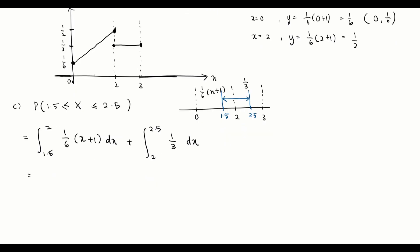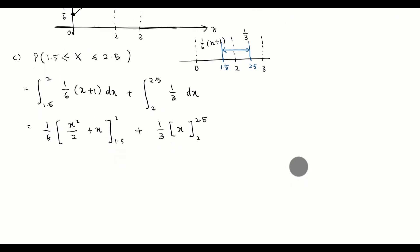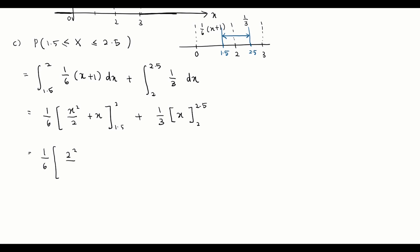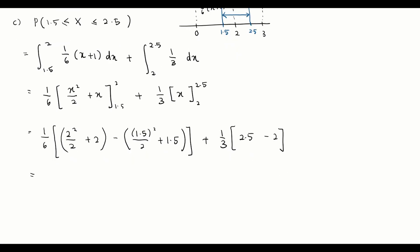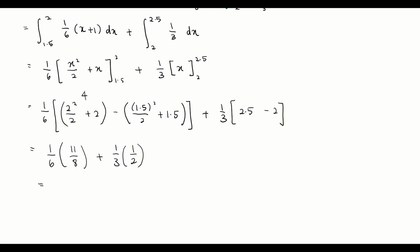Integrating: the first part is (1/6)[x²/2 + x] from 1.5 to 2, and the second part is (1/3)x from 2 to 2.5. Substituting limits: the first part gives (1/6)(2²/2 + 2 − 1.5²/2 − 1.5) = (1/6)(11/8) and the second part gives (1/3)(2.5−2) = (1/3)(1/2), giving a total of 19/48.